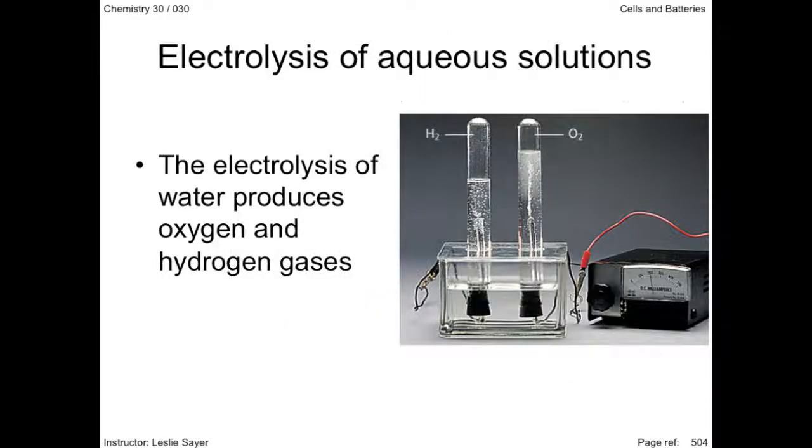In this electrolytic cell, each electrode is enclosed in a glass tube to prevent the two gases from mixing. If water is to be considered as either the oxidizing agent or reducing agent in an electrolytic cell, use the standard electrical potentials as shown in your data book.